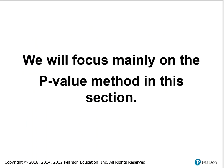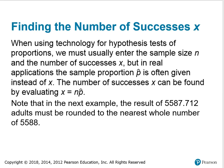We will focus mainly on the p-value method in this particular section. When using technology for hypothesis tests of proportions, we must usually enter the sample size n and the number of successes x. But in real applications, the sample proportion p-hat is often given instead of x. The number of successes x can be found by evaluating x equals n times p-hat.